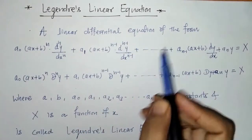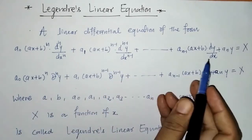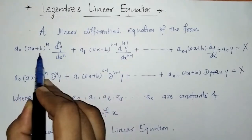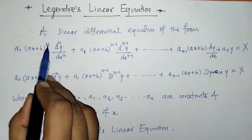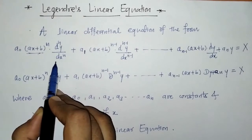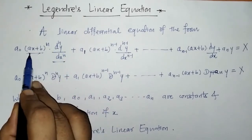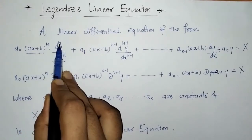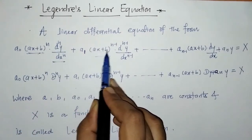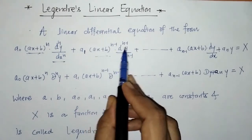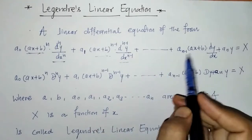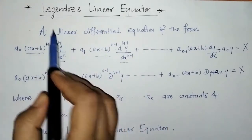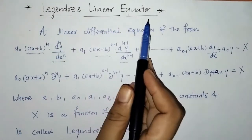A linear differential equation of this form has derivative terms in decreasing order, and the coefficient of each derivative term contains (ax + b). We can check that the power of (ax + b) is the same as the order of the corresponding derivative term — the power is n and the order is n, then n minus 1 and n minus 1, and so on. This differential equation is a linear differential equation with variable coefficients, and it is known as Legendre's Linear Differential Equation.